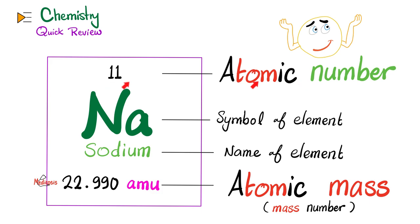If you add the number of protons to the number of neutrons, roughly speaking you get the atomic mass. And what's that unit? The atomic mass unit.